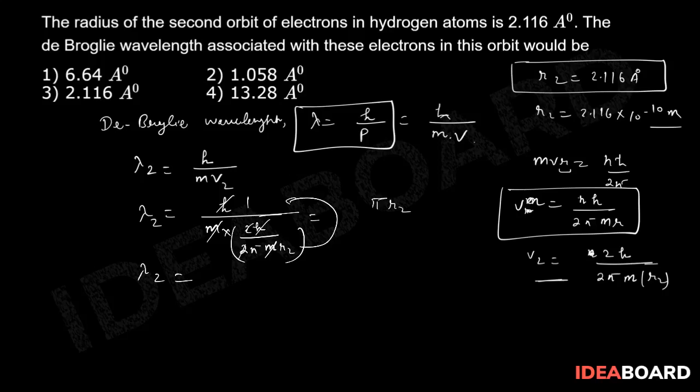Pretty interestingly, I can directly utilize this in angstrom. This can be written as 3.14 into r2 was given 2.116 angstrom. If you multiply, finally you will be getting 6.64 angstrom. The only nearest option is this value, so obviously option number 1 has to be the final choice for us.